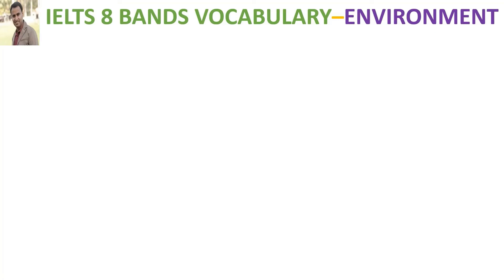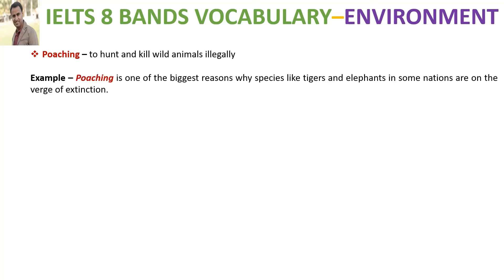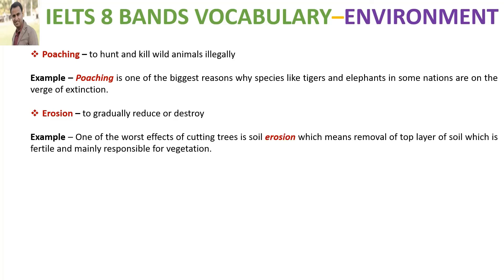The next word is 'poaching', which means to hunt and kill wild animals illegally. It is one of the biggest reasons why species like tigers and elephants in some nations are on the verge of extinction.